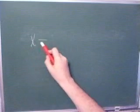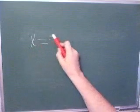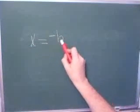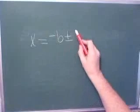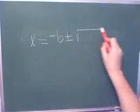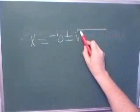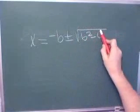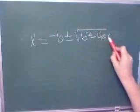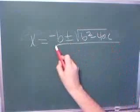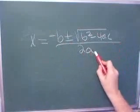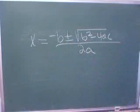Let's sing the quadratic formula song. X equals negative B plus or minus the square root of B squared minus 4AC all over 2A. Say it with me again.